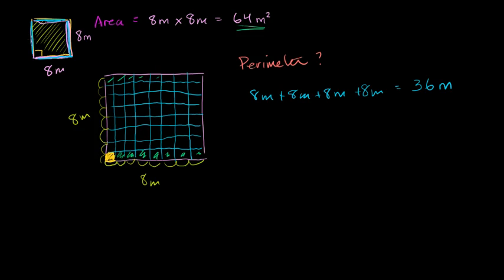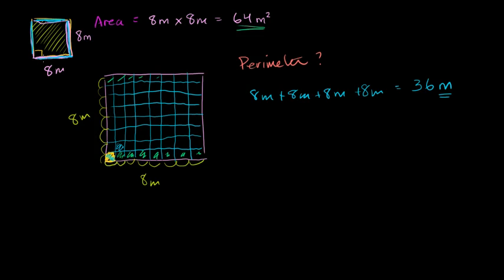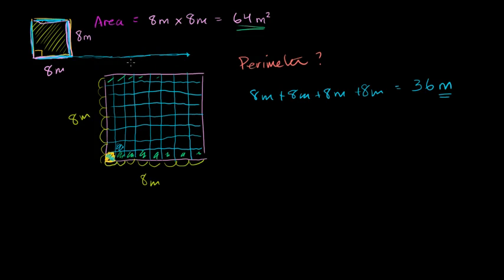Notice when we measured just the amount of fencing we needed, we ended up just with meters — a one-dimensional measurement. That's because we're not measuring square meters here; we're not measuring how much area we're taking up. We're measuring a distance to go around. You could imagine straightening out this fence, and it would just become one big fence of the same length. That's why we just have meters for perimeter, but for area we got square meters.